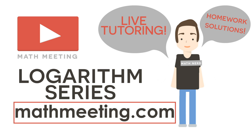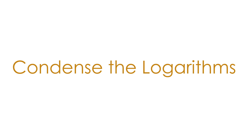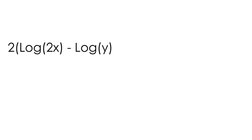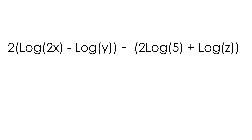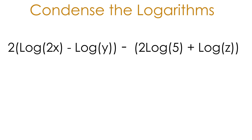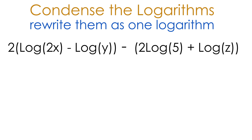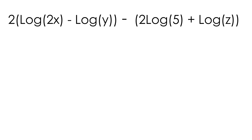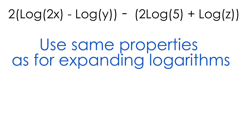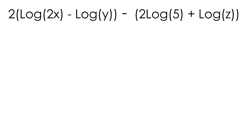Let's get started right away with this example. We have 2 multiplied by the log of 2x, minus log y, subtracted by 2 log 5 plus log z. We have to condense all of these logs and rewrite them as one single logarithm, using the same properties we used for expanding logs.